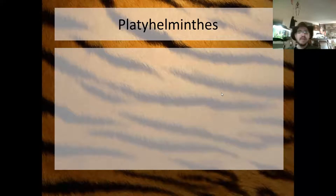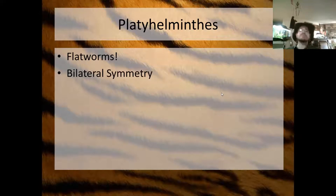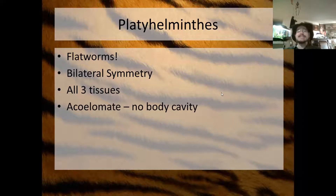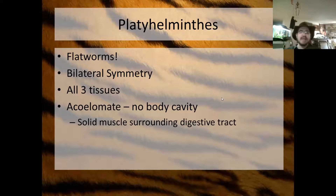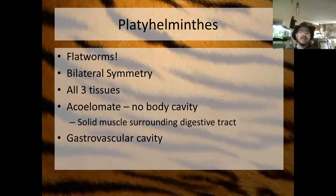That's it for Phylum Mollusca. Next up is Phylum Platyhelminthes — the flatworms. Flatworms show bilateral symmetry and have all three tissues: ectoderm, mesoderm, and endoderm. They are acoelomate, meaning they have no body cavity — just a solid mass of mesoderm with digestive organs suspended inside. They have a gastrovascular cavity, an incomplete digestive system with one opening.